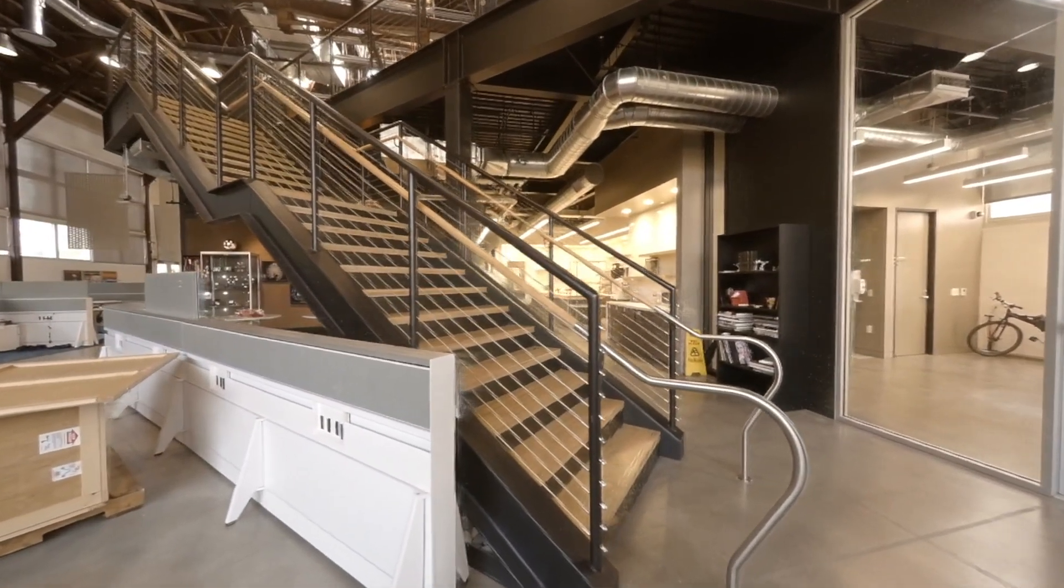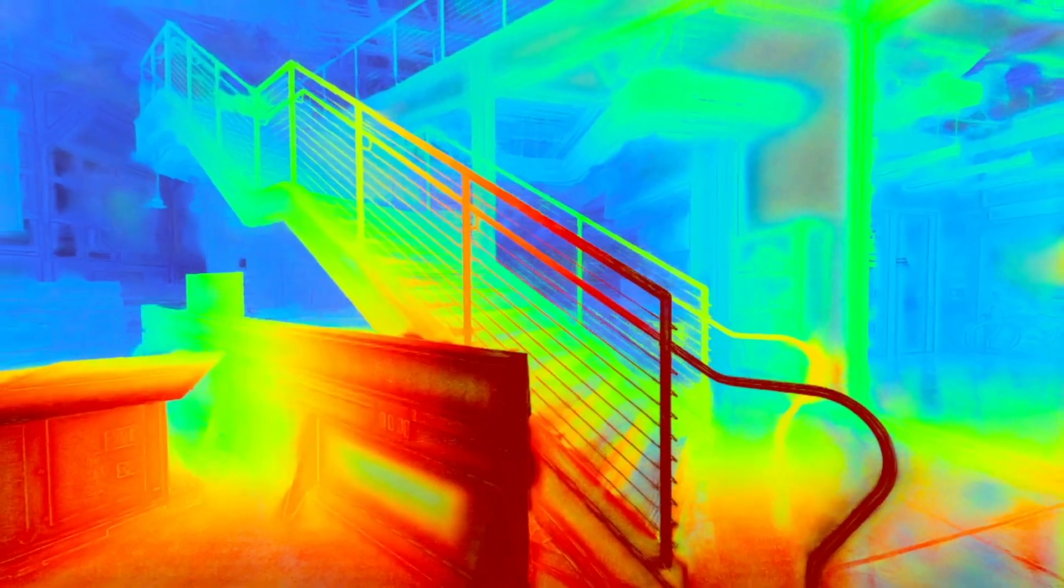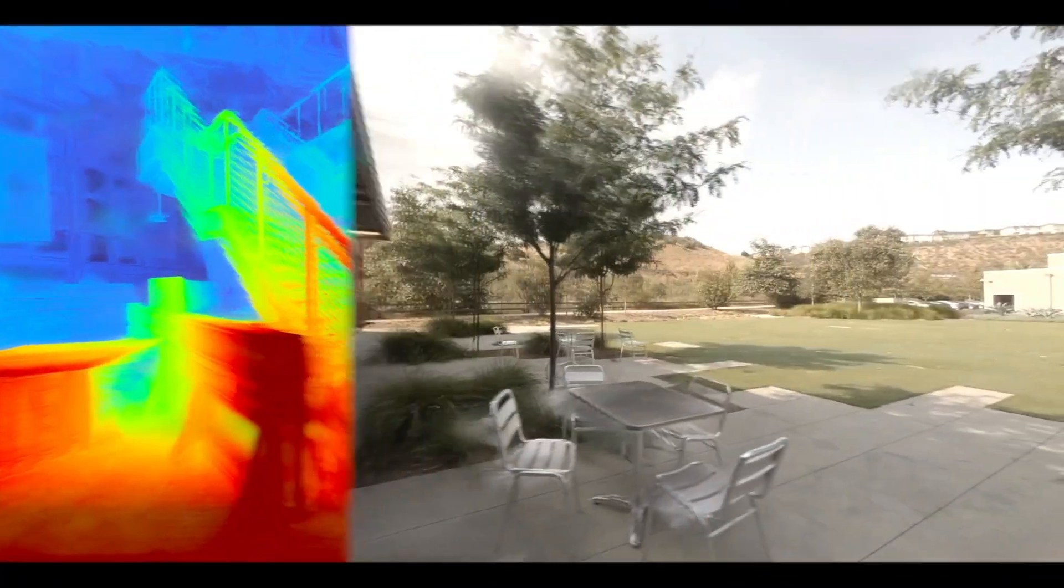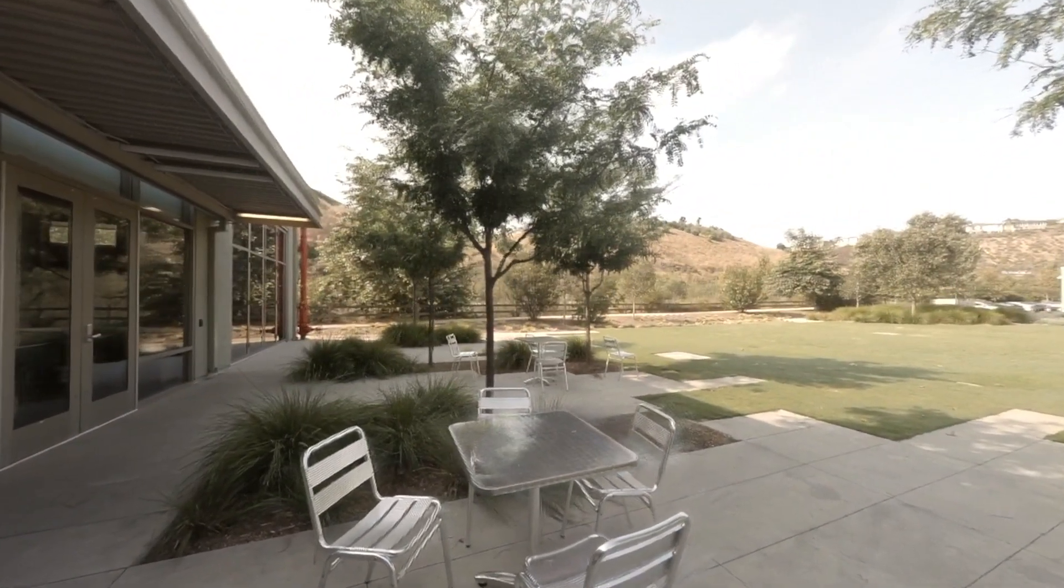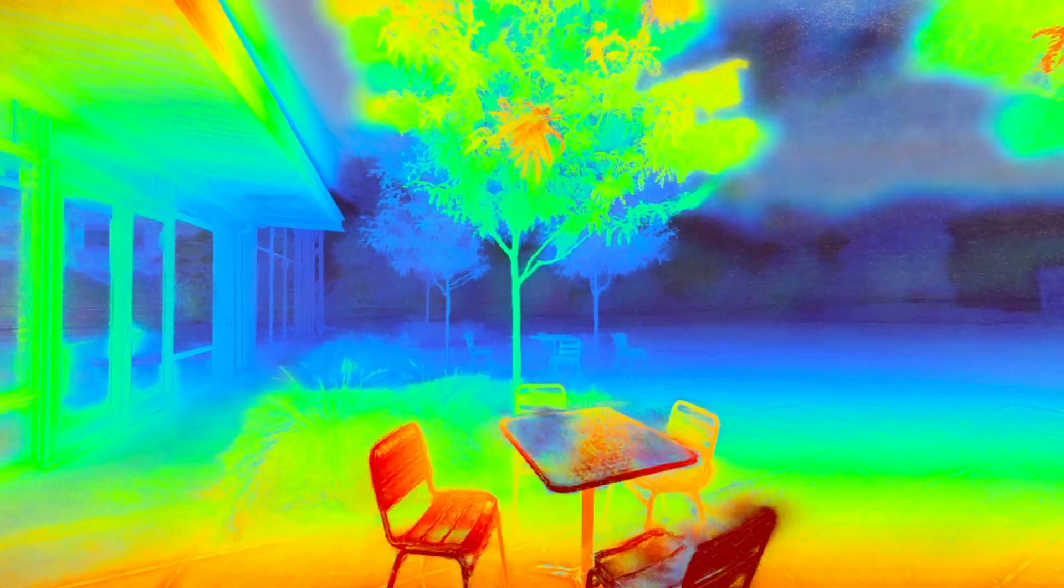Here we false-colored the MPI planes, creating a pseudo-depth map. Note in this scene how the reflection on the metallic table is placed on a far MPI plane.